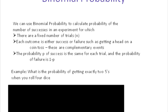Let me show you an example. What's the probability of getting exactly two fives when you roll four dice? We have to think about whether this can be interpreted as an experiment where you have a fixed number of trials and you're interested in either success or failure and the probability of each success is the same.